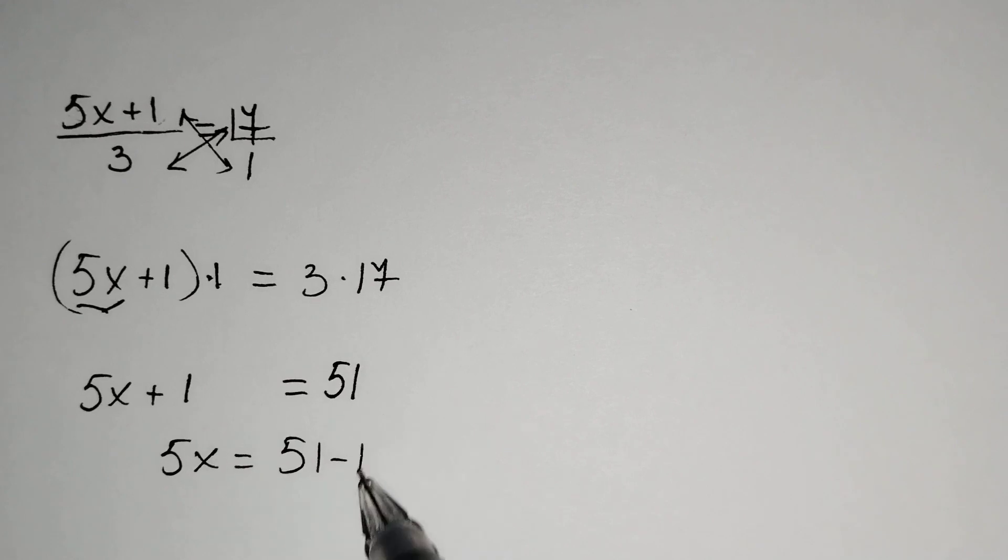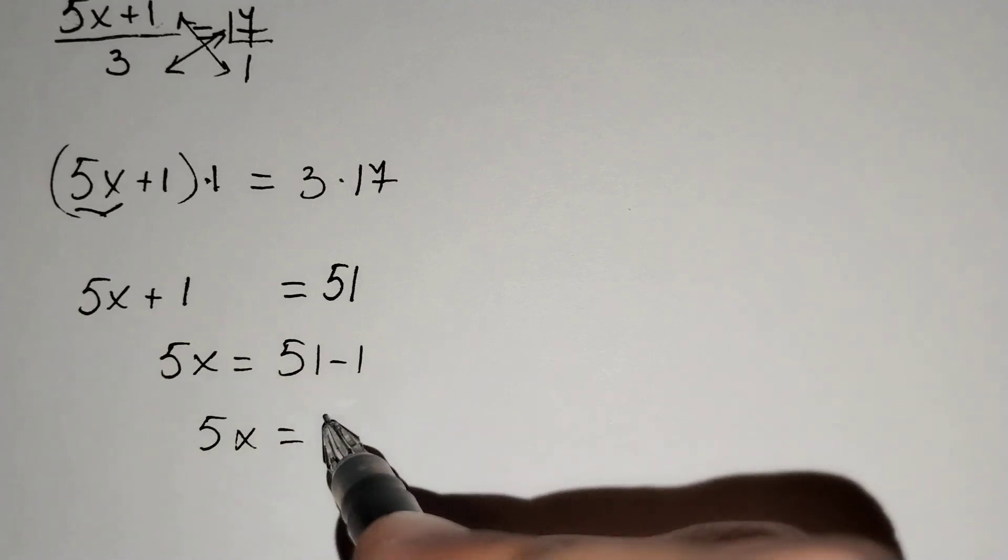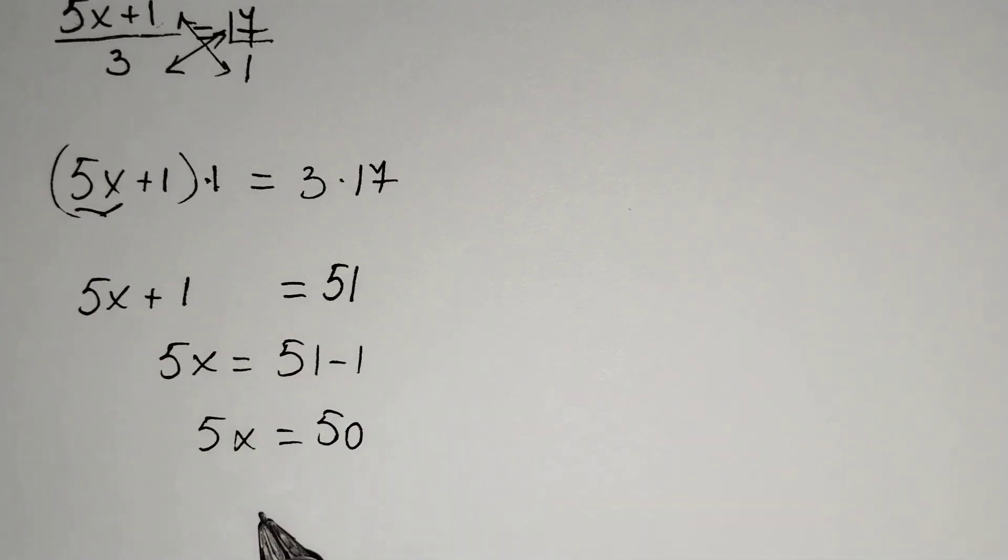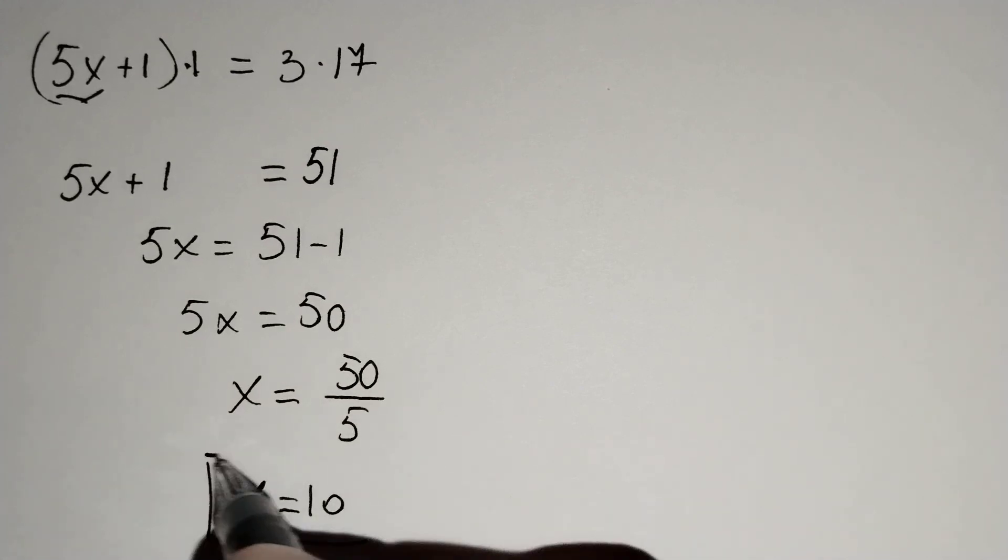5x = 50. From here, x = 50/5, and 50 divided by 5 equals 10. Let's check it.